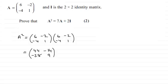Now I'll work out the right-hand side. We've got 7A plus twice the identity matrix. In other words, we've got 7 multiplied by matrix A [6, -2; -4, 1].